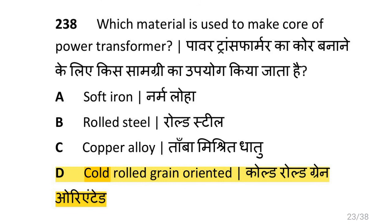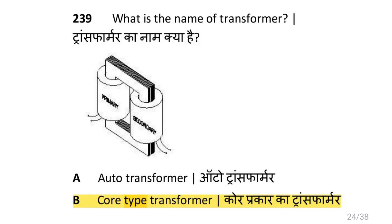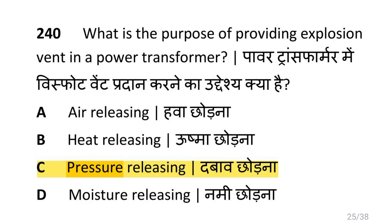Which material is used to make the core of a power transformer? That is cold roll grain oriented material. What is the name of that transformer type? Cold type transformer. What is the purpose of providing an explosion vent in a power transformer? That is for pressure releasing.